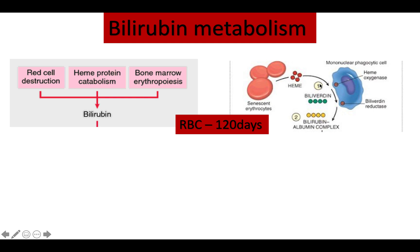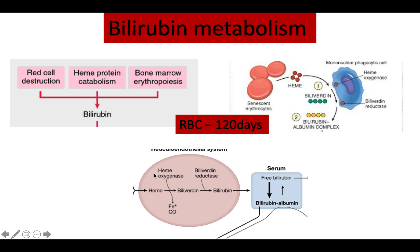Heme can be broken down further into bilirubin, but first there is an intermediate step. Mononuclear phagocytic cells — also known as macrophages — found within the spleen, reticuloendothelial system, or liver (where they're known as Kupffer cells), break down hemoglobin into biliverdin by an enzyme known as heme oxygenase. Biliverdin is then converted to bilirubin by biliverdin reductase, a rate-limiting enzyme.